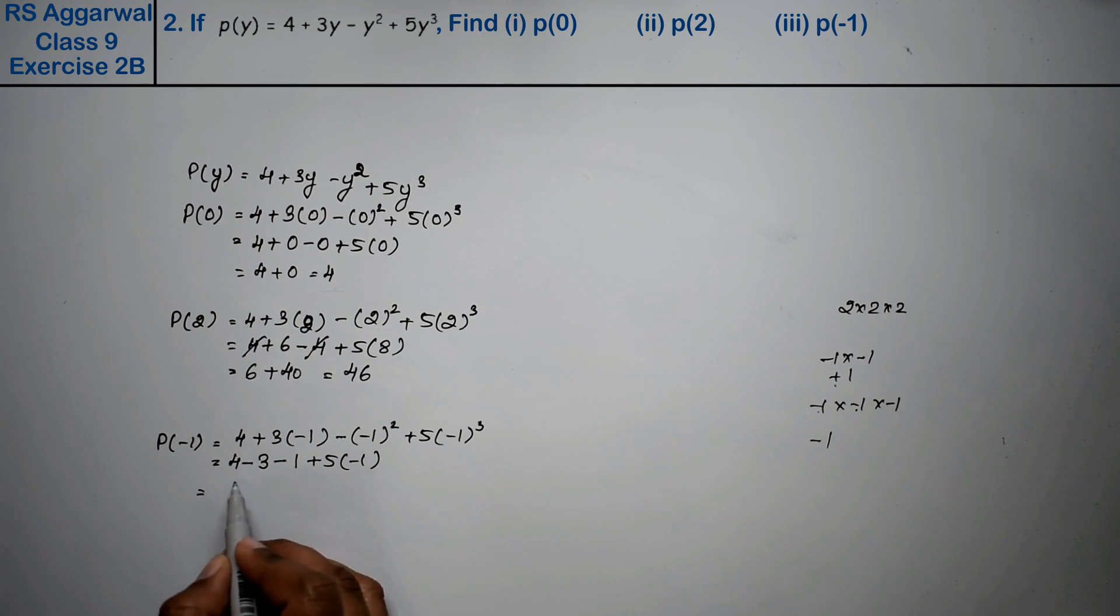So: 4 minus 3 minus 1 minus 5. This -1 and -3 add to -4, and -4 minus 5 equals -5. So the answer is -5.